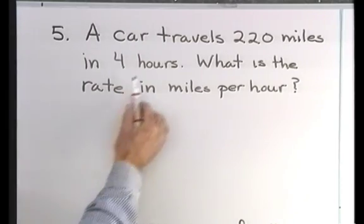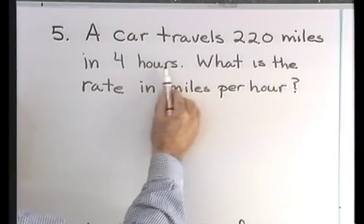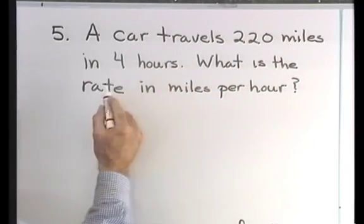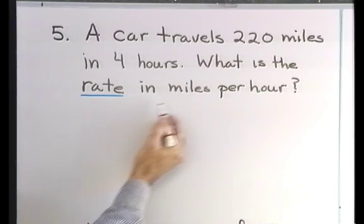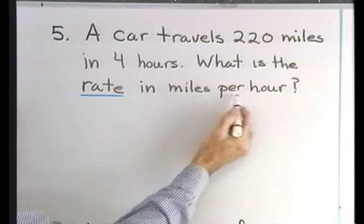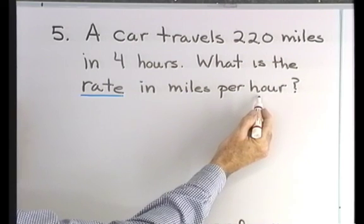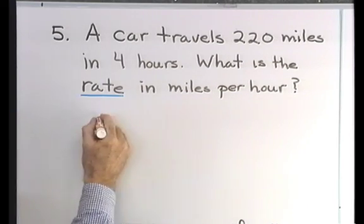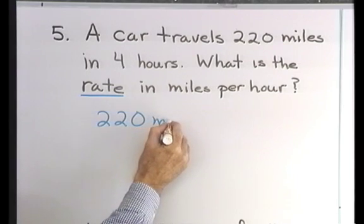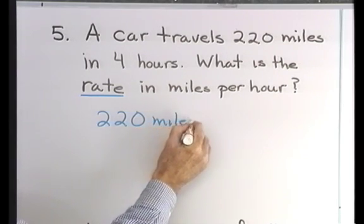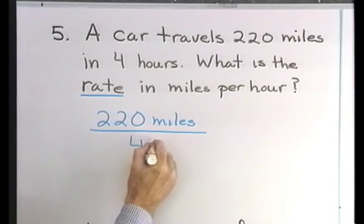Whenever we have a ratio that compares two different quantities — here we have miles and hours — that's called a rate. So when I want miles per hour, I want miles in the numerator and hours in the denominator. So I'll take 220 miles and put that over 4 hours.